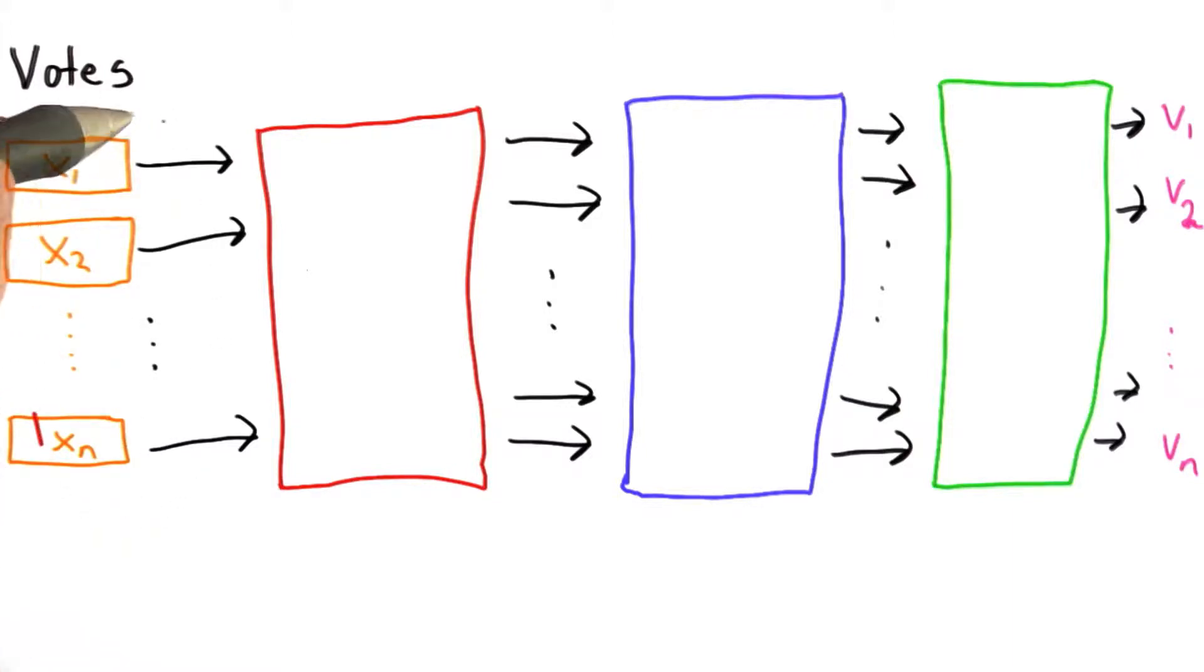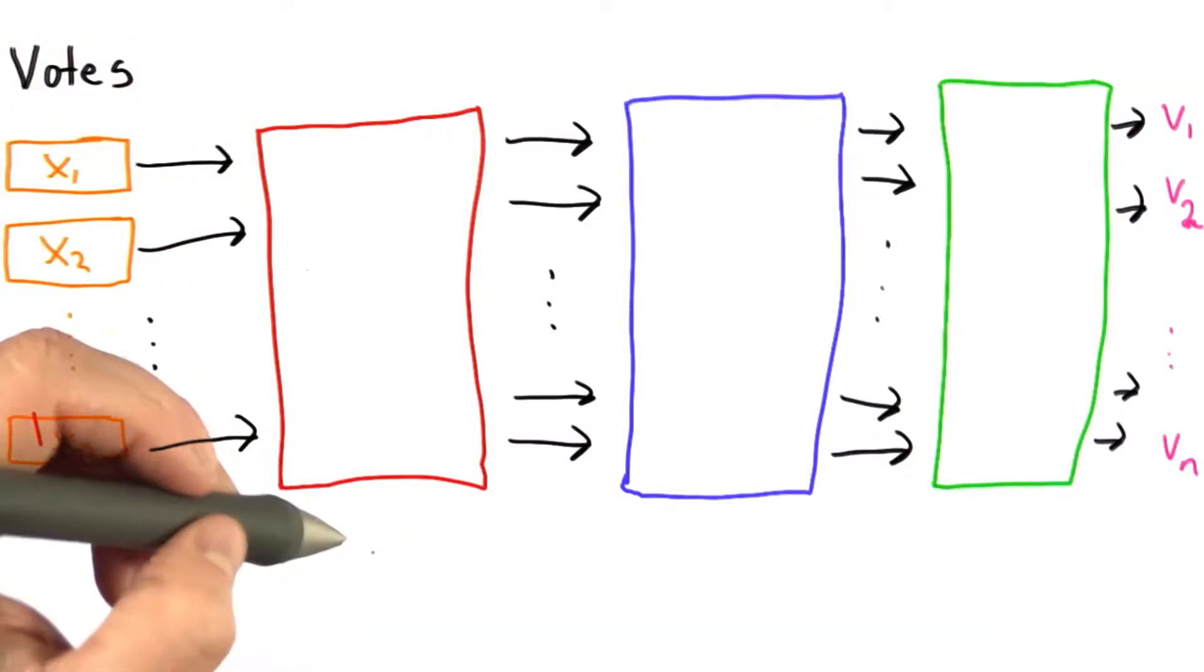So here's the idea. You collect the votes from the voters. Those are inputs to a random permutation.